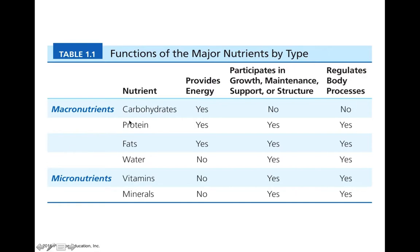Macronutrients include carbohydrates, proteins, fats, and water. Carbohydrates, proteins, and fats all provide energy. Water does not provide energy but is required for all metabolic processes, including growth, maintenance, support, and structure. Carbohydrates provide energy but don't directly regulate body processes, whereas proteins, fats, and water participate in regulating body processes. Micronutrients — vitamins and minerals — are also involved in growth, maintenance, structure, and regulation of body processes, but neither vitamins nor minerals provide energy to the body.